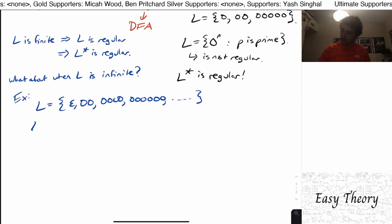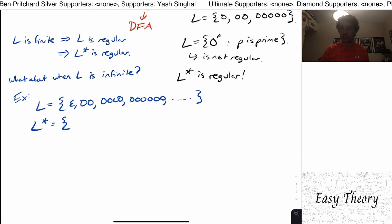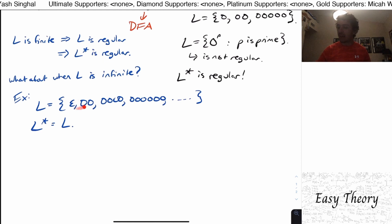Well, then if we look at L star, if I take any string in here and concatenate it with any string in here, then I'm still going to get an even length string. And because I have the epsilon, I'm still going to get all the original strings also. So in fact, this language is equal to L in this particular case, even though it doesn't have every single string. It doesn't have strings of length one, for example.